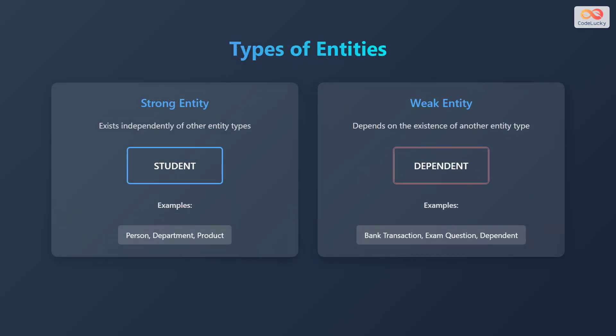Entities can be strong or weak. A strong entity exists independently of other entity types — for example, a student, department, or a product. A weak entity depends on the existence of another entity type. Examples include a bank transaction, an exam question, or a dependent.